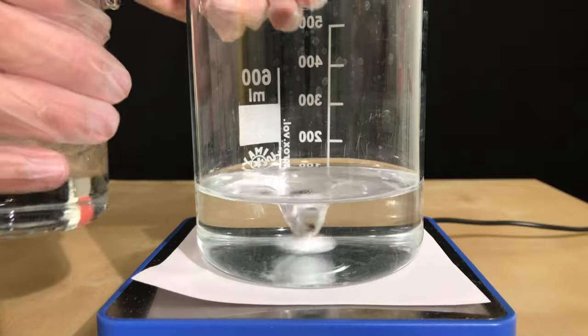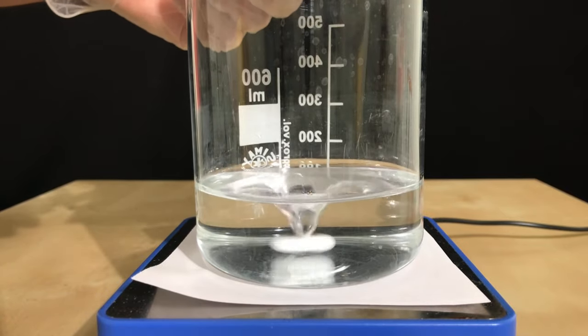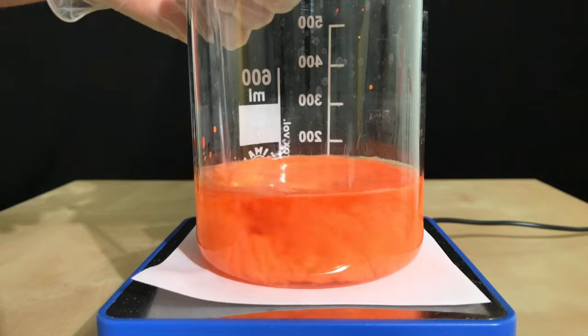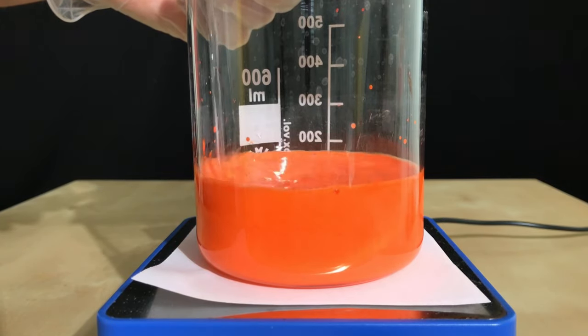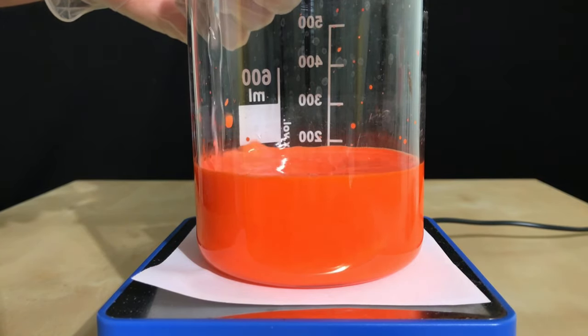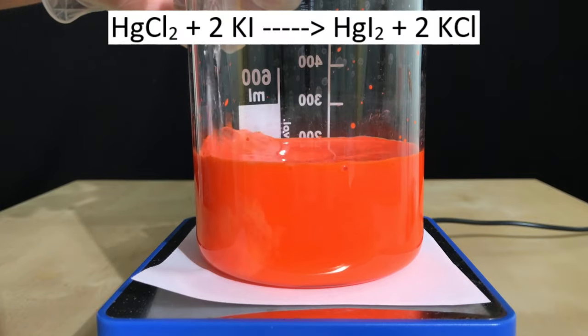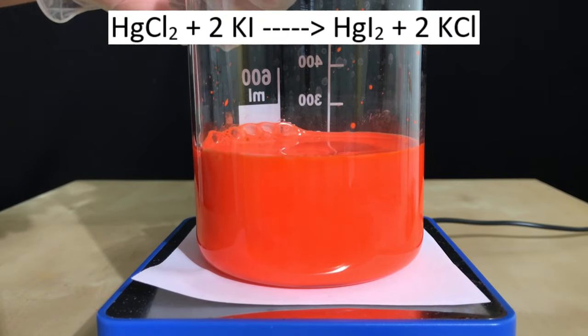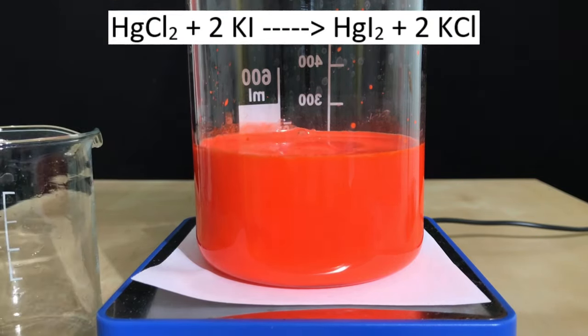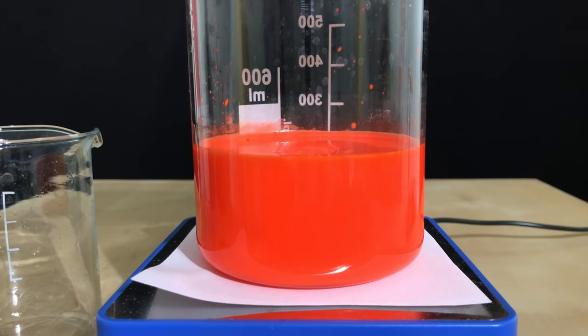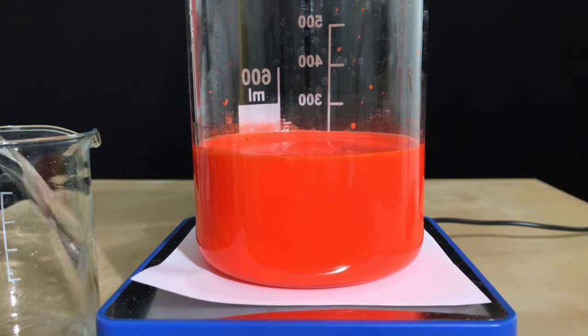Once the mercury chloride had finally dissolved, it was time for the fun part. We simply have to combine the solutions. As you can see, a red precipitate of mercury-2-iodide immediately crashes out. The reaction taking place is known as a double replacement reaction. Mercury-2-chloride reacts with potassium iodide to form mercury-2-iodide and potassium chloride.